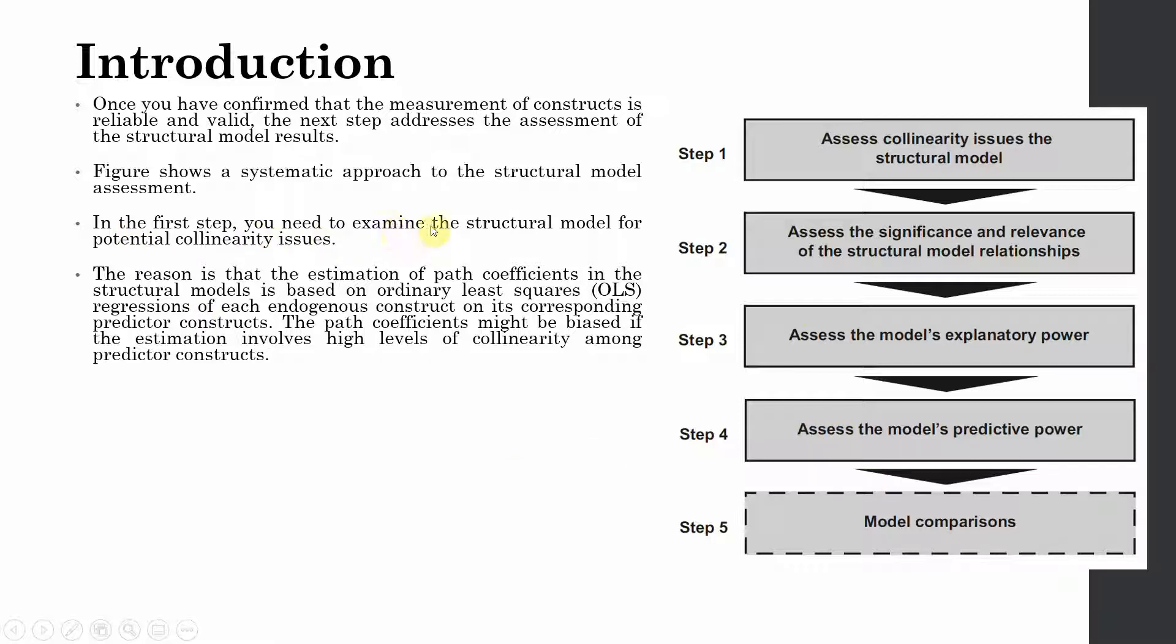In the first step, you need to examine the structural model for potentially collinearity issues. Why is this step one? The reason is that the estimation path coefficients in the structural model are based on ordinary least squares regression of each endogenous construct on its corresponding predictor constructs. The path coefficient might be biased if the estimation involves high levels of collinearity among predictor constructs. If there is high collinearity among predictor constructs, then your path coefficients may be biased.